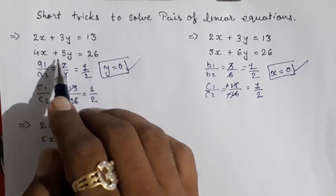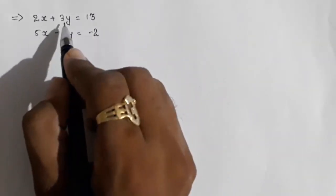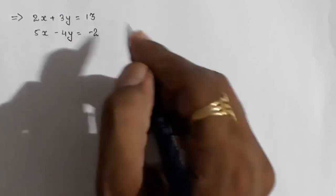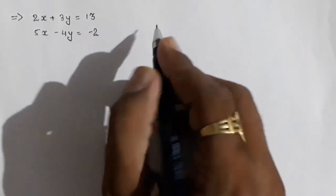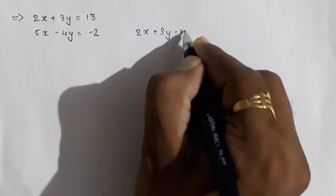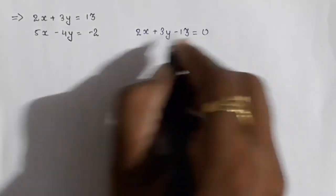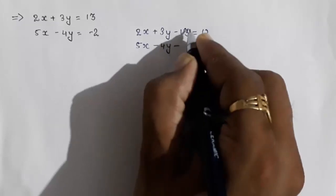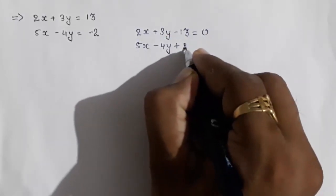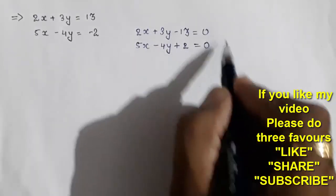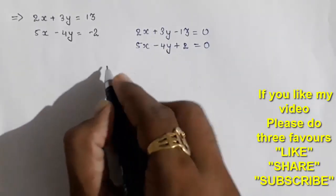Moving towards the next part, we are going to find x and y by a short method — which is actually derived from one of the standard methods. First, you always have to arrange the equations in standard form. This is basic — every time arrange in standard form first. Then this becomes -13 and this becomes +2. Now in standard form, you can directly find x.